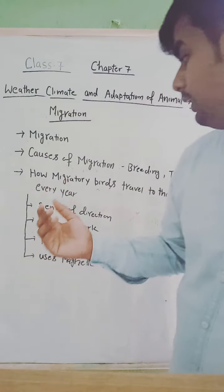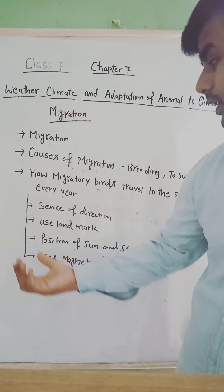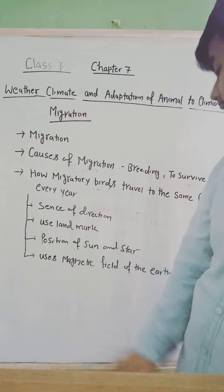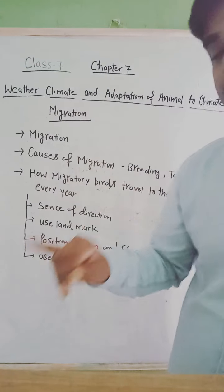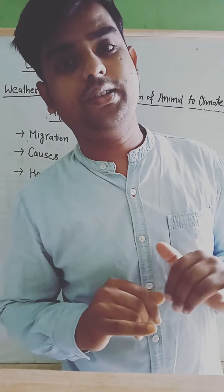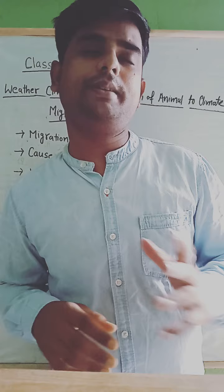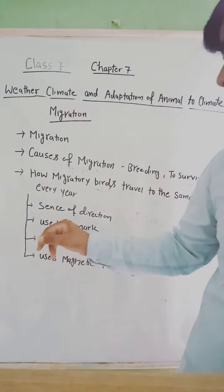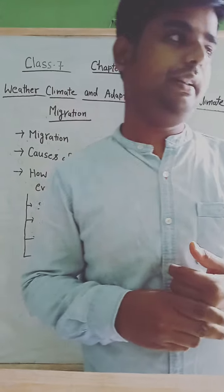There are four steps by which a migratory bird travels in the same direction to the same places every year. The first one is sense of direction — they have a good sense of direction which helps them travel to the same places every year. The next one is they use landmarks.